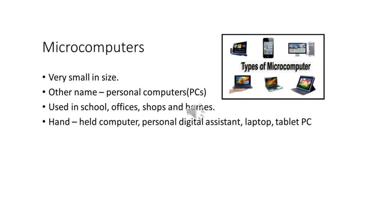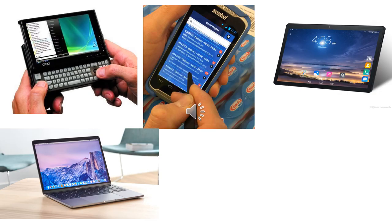Some examples of microcomputers are: handheld computer, otherwise called a palmtop; personal digital assistant or PDA; laptop; tablet; and PC. You can see the pictures here. The first one is the handheld computer or palmtop. The second picture is PDA or personal digital assistant. The third one is tablet PC. The fourth one is laptop. These are the four different types of microcomputers.